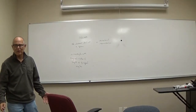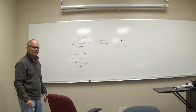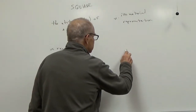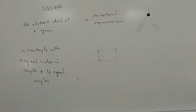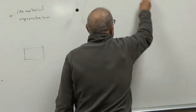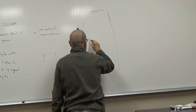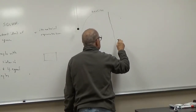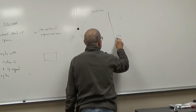It doesn't matter where you are, what century, what country, what language you're using — this is the ideal of a square. And the material representation is the way this ideal is transformed into the concrete world.